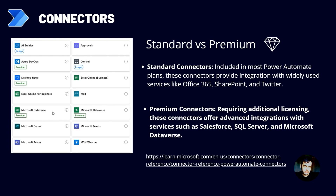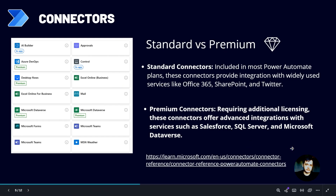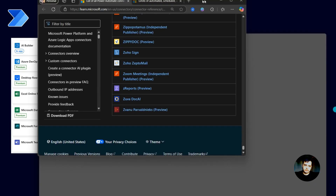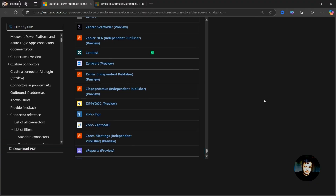But with the standard plan, we can already build a lot of cool automation for our daily tasks. I will leave a link in the lesson material where you can see the full list of connectors. One thing that's very important when you're going to build automation is to know the connectors' limitations, so you could go to the list of connectors.